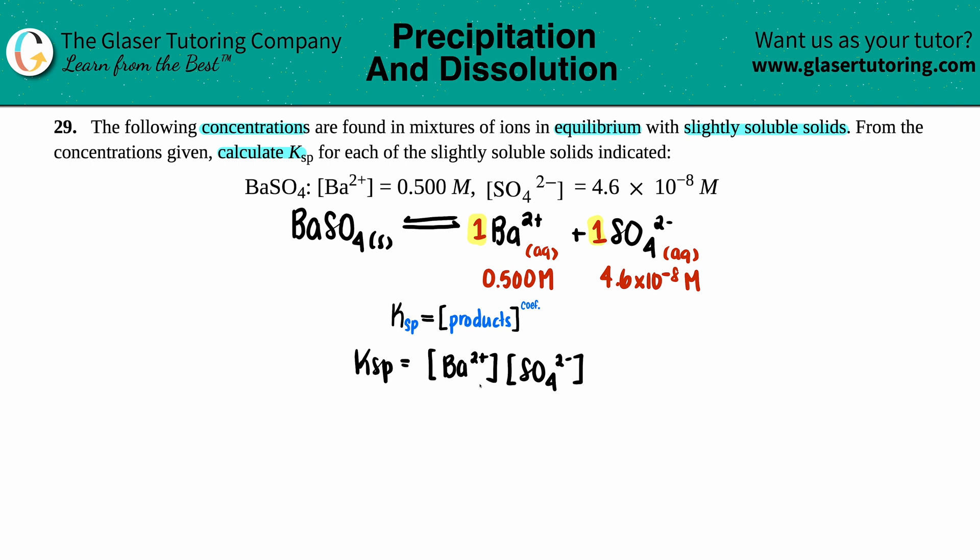The barium concentration they told us was 0.500, and the sulfate ion they told us was 4.6 times 10 to the negative 8. We can now solve for the Ksp, so let's get going.